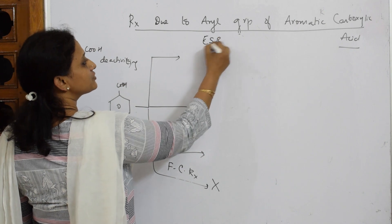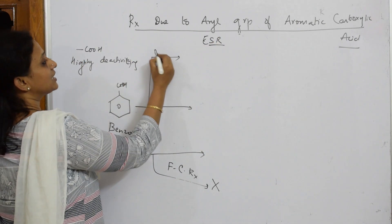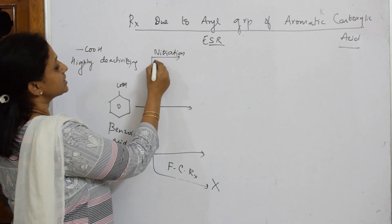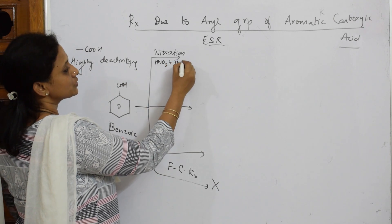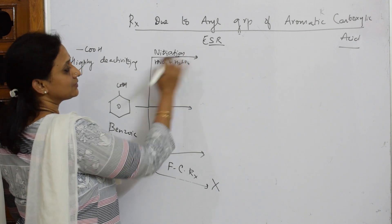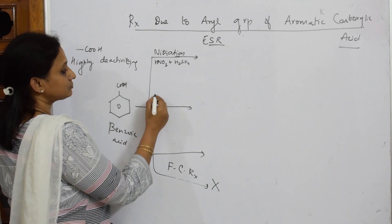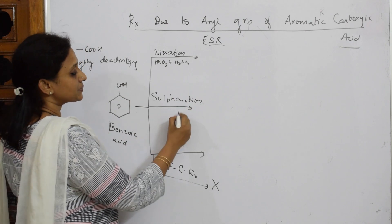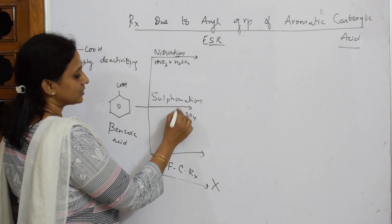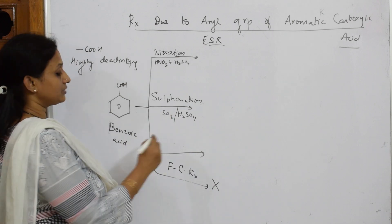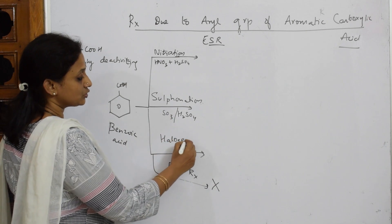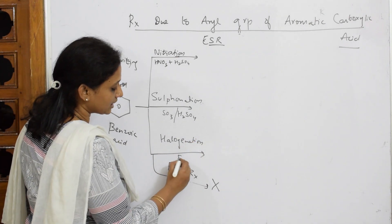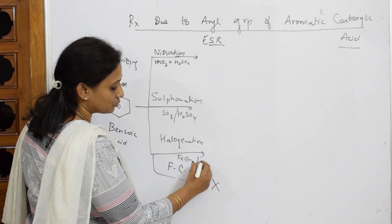So let us write the electrophilic substitution reactions for this. Suppose if I speak about nitration - that is nitrating mixture. What is nitrating mixture? HNO3 plus H2SO4. Suppose if they give you sulfonation process - one more electrophilic substitution, sulfonation which occurs in the presence of sulfuric acid and SO3. If I am given halogenation - which halogen I am adding? I am adding bromine. Now for that bromine, I am going to take FeBr3 and add Br2 bromine.